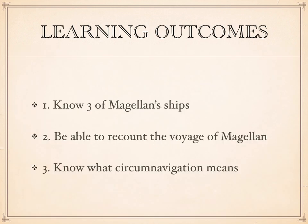So that brings us to the end of the presentation. You should know three of Magellan's ships: the Trinidad, the Victoria, the Concepcion, the Santiago, and the San Antonio — any three are fine. You should be able to recount the voyage: he went to the Canary Islands, down the west coast of Africa, landed in Brazil, then Port Julian, went through the Straits of Magellan between Tierra del Fuego and the south of South America, up to Guam, died in the Philippines, and the expedition eventually arrived back in Spain. Finally, you should know that circumnavigation means to sail around the world.